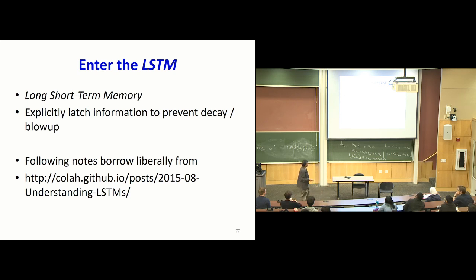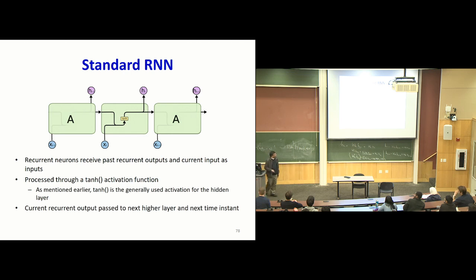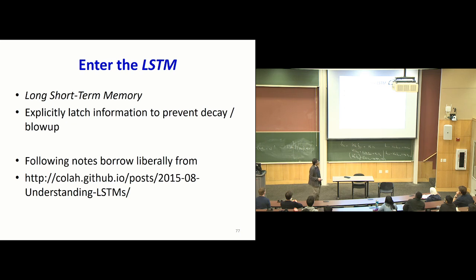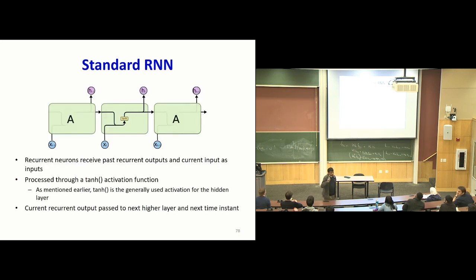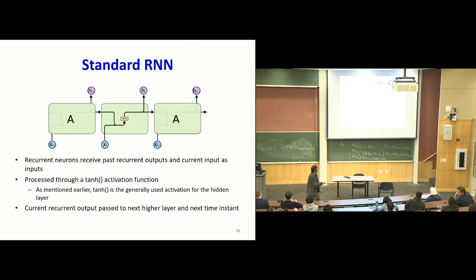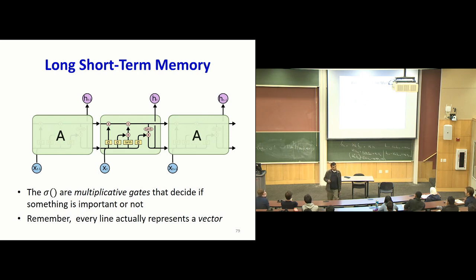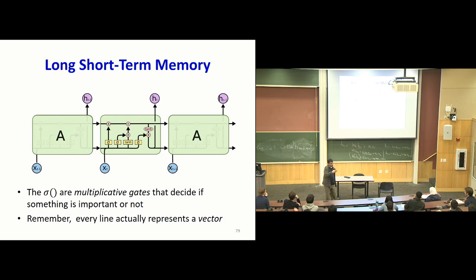This is the long short-term memory network, and the following notes borrow from colah's GitHub blog. Your standard recurrent network takes the hidden value, concatenates it with the input, passes it through a tanh activation to produce the next hidden value, and the output is computed from the hidden value. The LSTM looks a lot more complicated — but it's not so complicated if you think about what we just explained. The figure is scarier than it needs to be. Every line is a full matrix and every dot is a vector — we're seeing the entire network on its side.